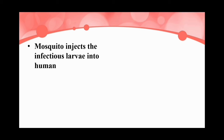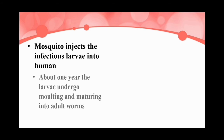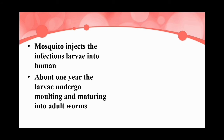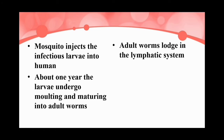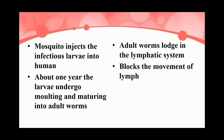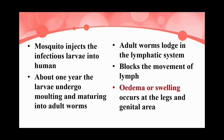The larvae prefer to live in the lymphatic system. Over about one year, the larvae undergo molting and mature into adult worms. Adult worms lodge in the lymphatic system and block the movement of lymph, causing edema or swelling of the lower parts, mainly the legs and the genital area.